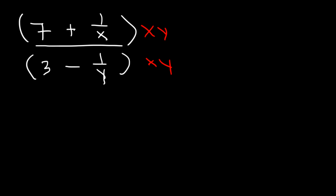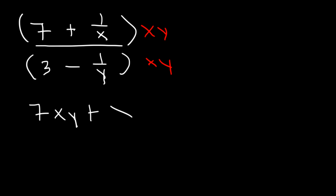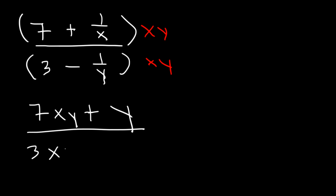So if we multiply 7 by xy, it's going to be 7xy. Then 1 over x times xy — the x variables will cancel — and we're going to get y. On the bottom, we have 3 times xy. And then 1 over y times xy — the y will cancel — leaving behind x.